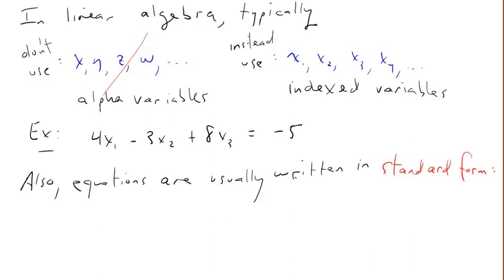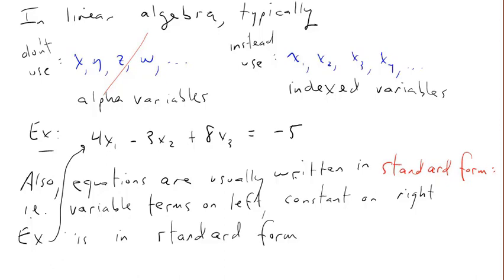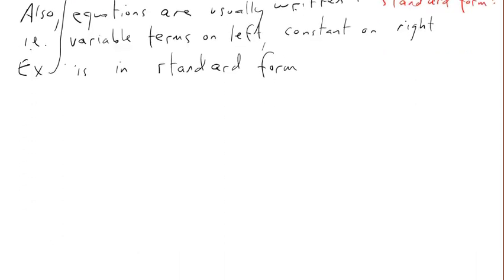Equations are usually written in standard form. That means all the variable terms are on the left and all the constants are on the right side of the equation. So this last equation is in standard form.